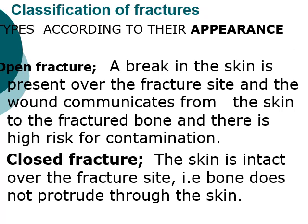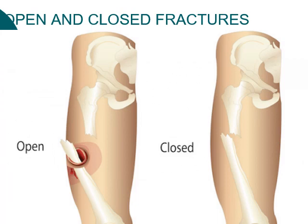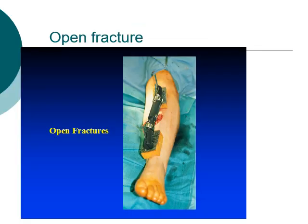These are examples of a closed and open fracture. In an open fracture you see the bone protruding outside the skin, while in a closed fracture the bone remains inside and the skin outside is intact. This next image is another example of an open fracture where the bone is almost completely outside.